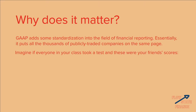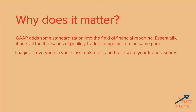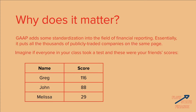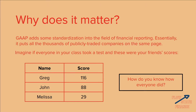Imagine if everyone in your class took a test, and these were your friends' scores. Greg got 116, John got an 88, and Melissa got a 29. So who do you think did best? Well, some of you might say Greg because he clearly has the highest number. But others may realize a problem — it's entirely possible that these tests were not administered on the same scale. So how do you know how everyone did?